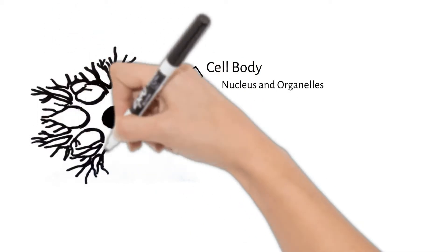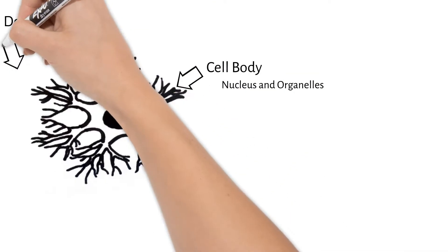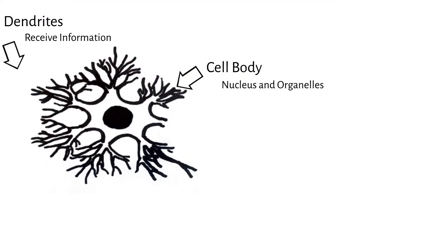Dendrites are the branches off of the cell body. They receive information from receptors or other neurons and conduct this information towards the cell body.